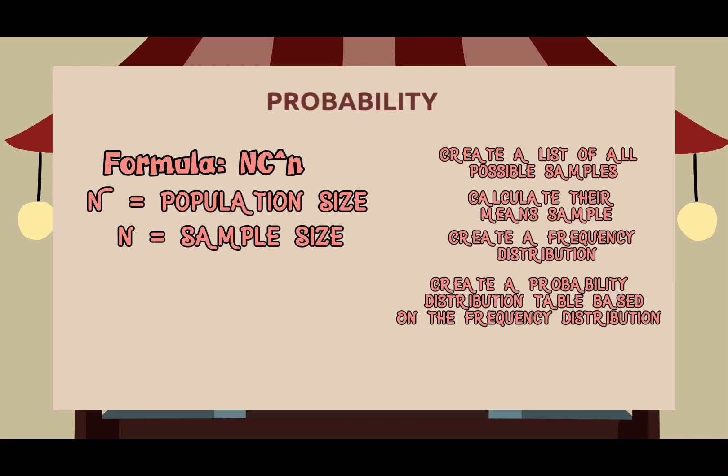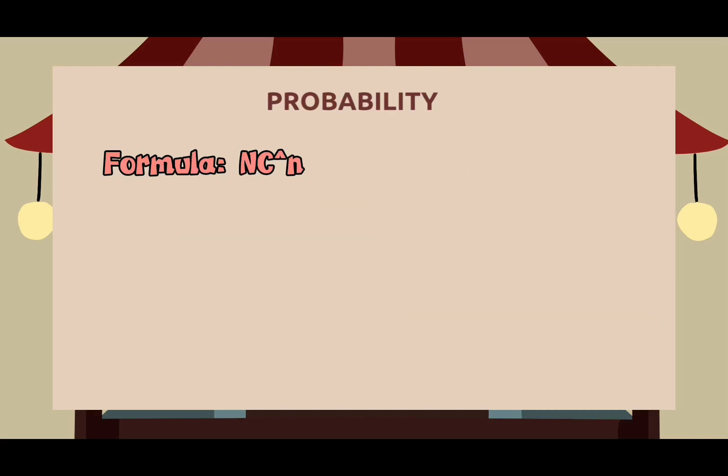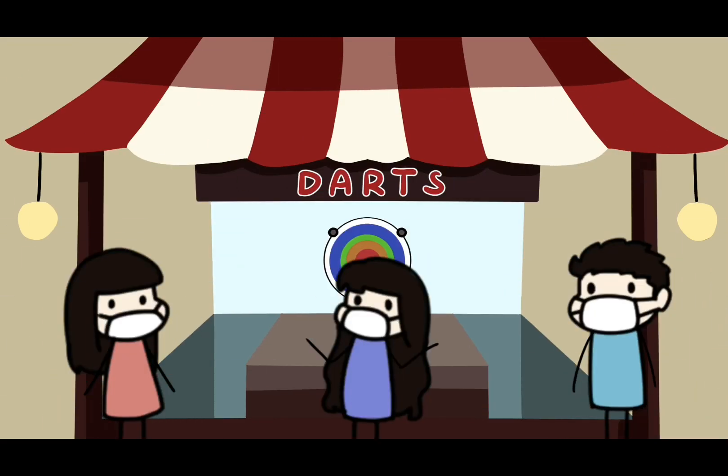How likely is it that you'll win this game? Using our formula, N combined n, we first need to determine how many possible size-three samples can be drawn. Because the population of our given colors equals five, our big N is equal to five. Because the participants are allowed three darts to try, our small n is equal to three. We'll get 5 combined 3 by substituting 5 factorial over 3 factorial multiplied by 5 minus 3 factorial. We can now obtain our ten possible samples from this. Thanks so much for the wonderful explanation. So what are we waiting for? Let's go on to our next game. Let's call Miss Francine to introduce us the Card Game.